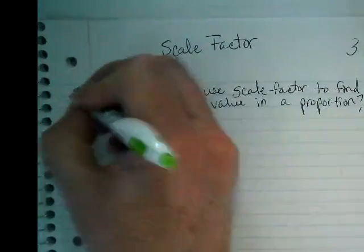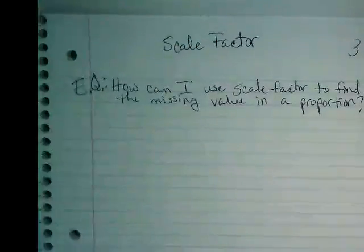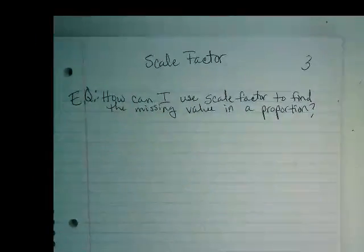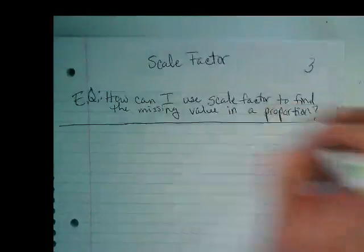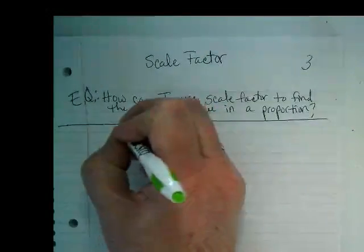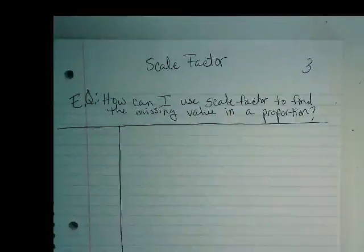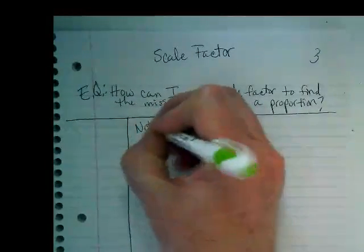You can even title that EQ for Essential Question. We are then going to divide up our paper like Cornell notes, drawing a line underneath the essential question, drawing a line down the left side for you to add questions on your own for studying. And in this section, we are going to put some notes.